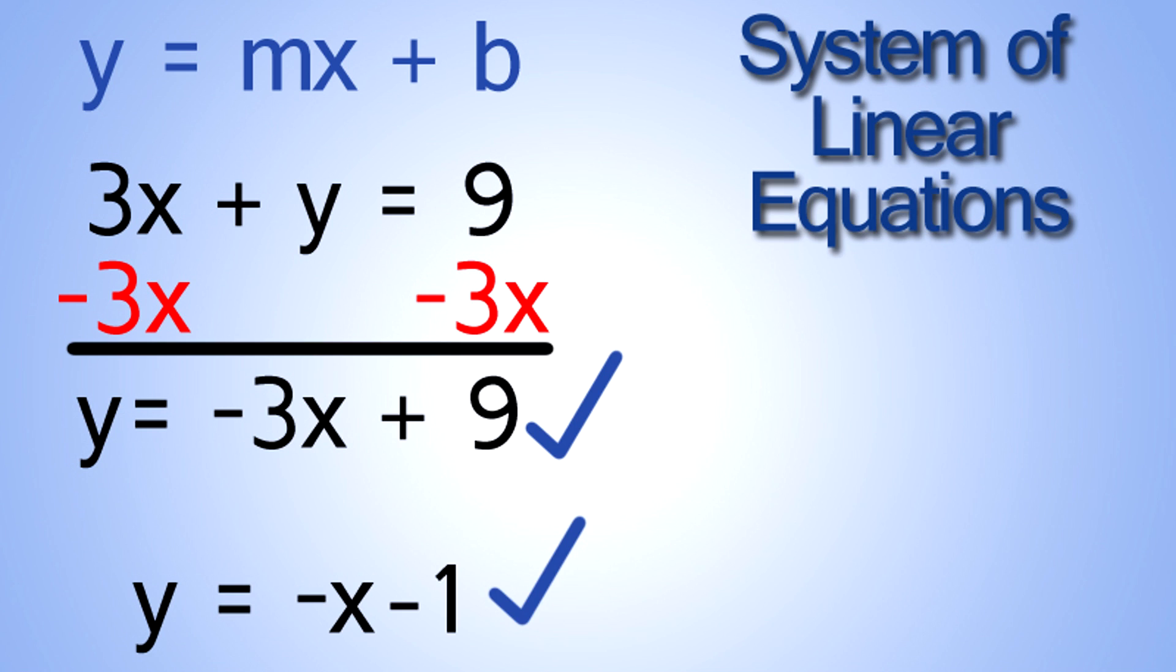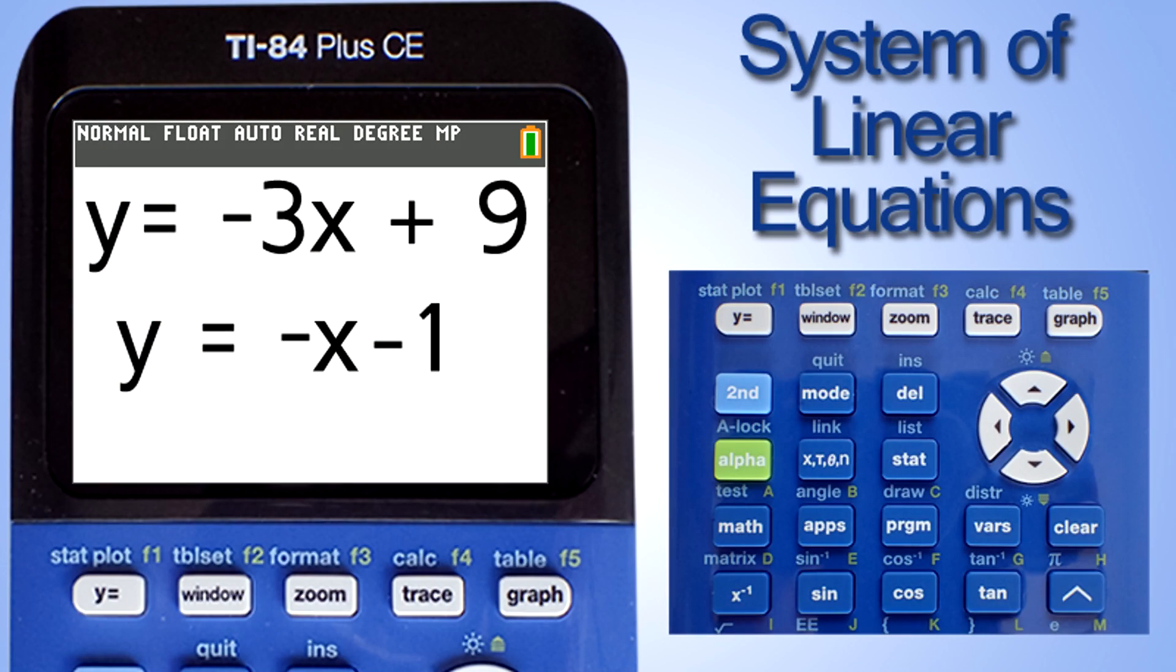The second equation is already in the slope-intercept form, so we will leave it alone. Now that we have our equations in slope-intercept form, let's begin to graph these linear equations into the TI-84 Plus CE calculator.